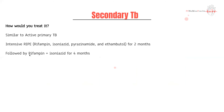To treat secondary TB, you treat it very similarly to active primary TB: intensive RIPE therapy — rifampin, isoniazid, pyrazinamide, and ethambutol for two months — followed by just rifampin and isoniazid for four months.